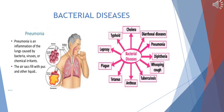Some heterotrophic bacteria cause diseases in human beings, for example diarrheal disease, cholera, typhoid, plague, tetanus, tuberculosis (TB), whooping cough, and pneumonia. Pneumonia is the inflammation of the lungs caused by bacteria, sometimes viruses, and sometimes chemical irritants. In this disease, the air sacs fill up with pus and other liquids, and the person has difficulty breathing.